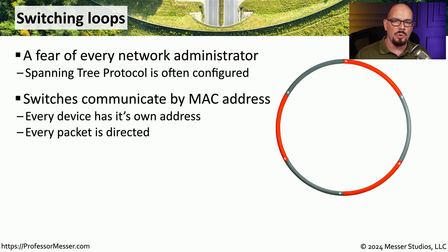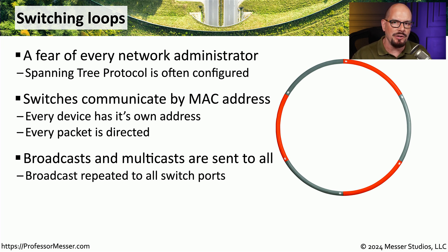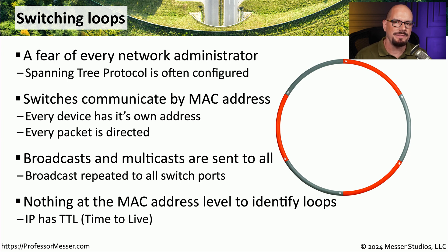Switches forward traffic based on the destination MAC address inside of a frame, so every unicast packet has a single destination. There are some packets that are sent to multiple devices simultaneously — broadcasts and multicasts are a good example of a single frame that can go into a switch and be transmitted out every other interface. With IP, we have a time-to-live field that prevents any packet from circling indefinitely, but there's nothing in the frame on a switch network that can prevent that type of loop.